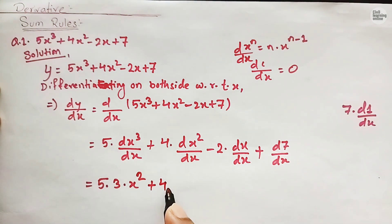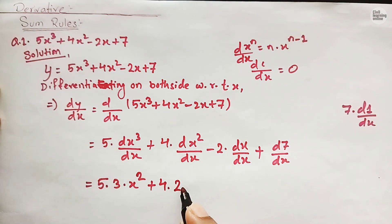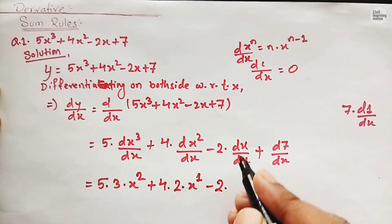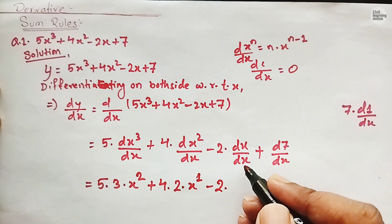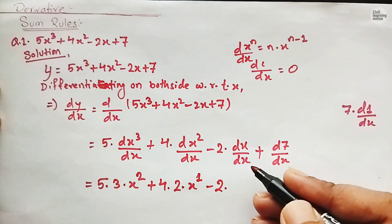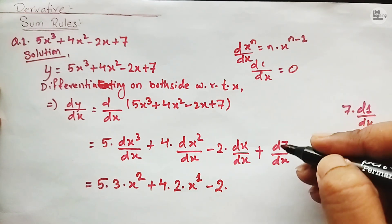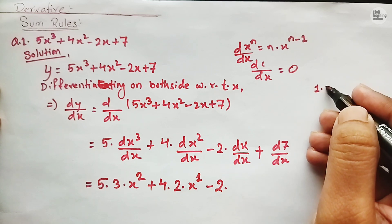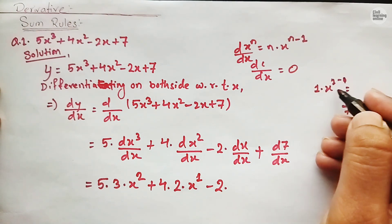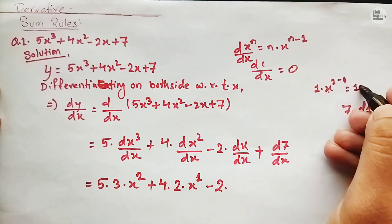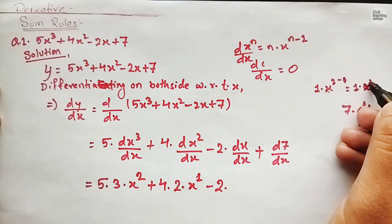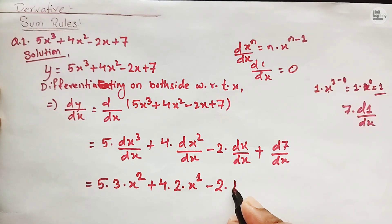For 4 times d(x squared) upon dx, n is 2, so we have 4 times 2 times x to the power 2 minus 1, which is x to the power 1. Then minus 2 times d(x) upon dx equals 1, because dx upon dx equals 1 — or using the formula, n is 1 so 1 times x to the power 1 minus 1 equals x to the power 0 equals 1. The derivative of the constant is 0.